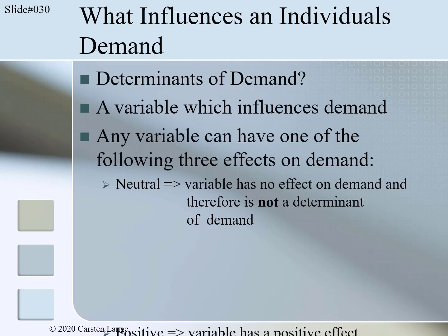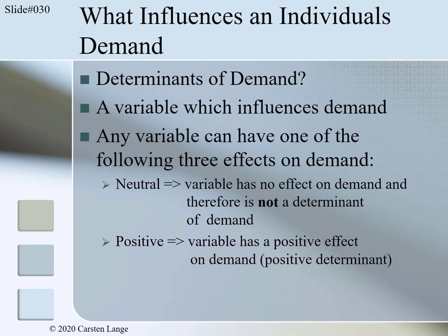The second effect is a positive effect. In general, a positive determinant would increase demand when the variable itself increases, so the variable and demand are moving in the same direction. For example, in the market for ice cream, the higher the outside temperature, the higher the demand for ice cream. Temperature is a positive determinant for ice cream demand.